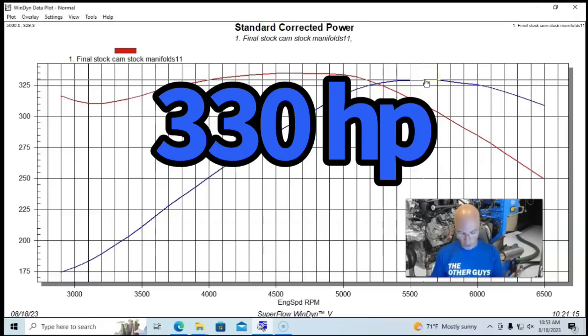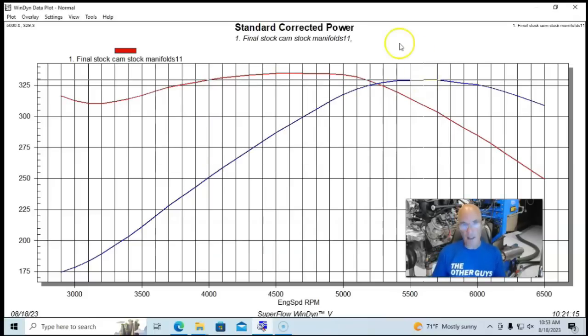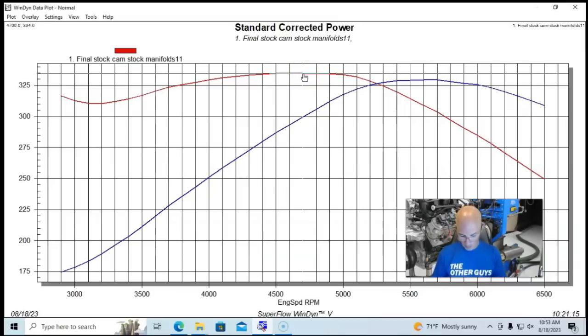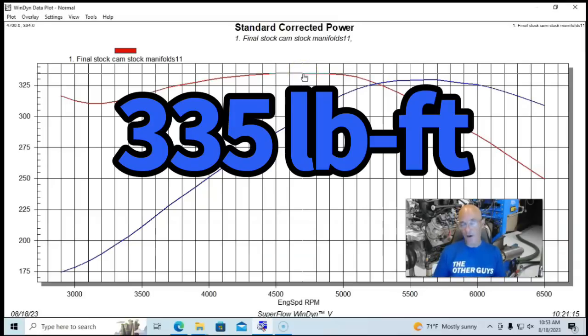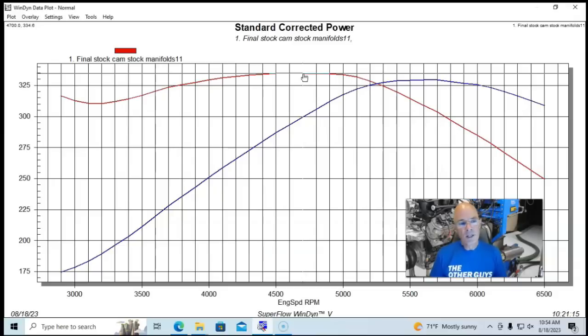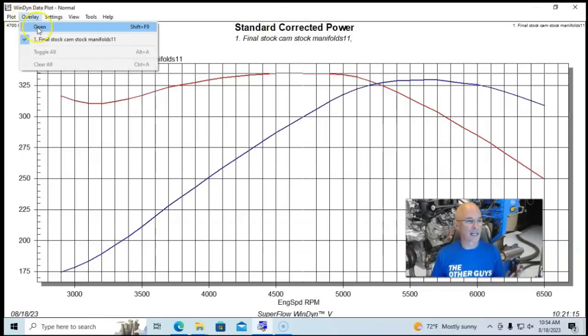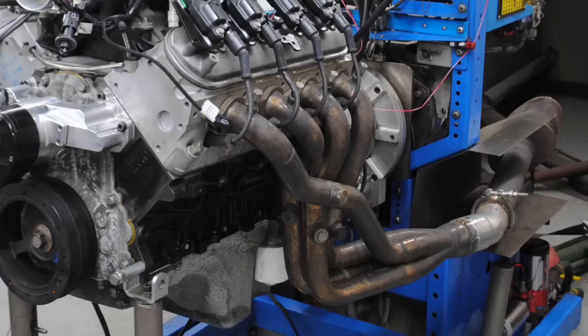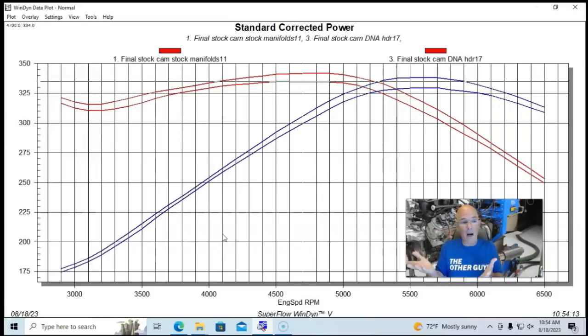We ran it with the Holley HP management system so that we could dial in each combination, give it the right air fuel that provided the optimum tune and optimum power curve. Running in stock condition with just an electric water pump and headers and our stock exhaust manifolds with two and a half inch exhaust extensions on them, our little 4.8 liter did good. It made 330 horsepower at 5,700 RPM. Fairly flat torque curve, very consistent within one or two foot pounds. But the peak actually was 335 foot pounds at 4,600 RPM.